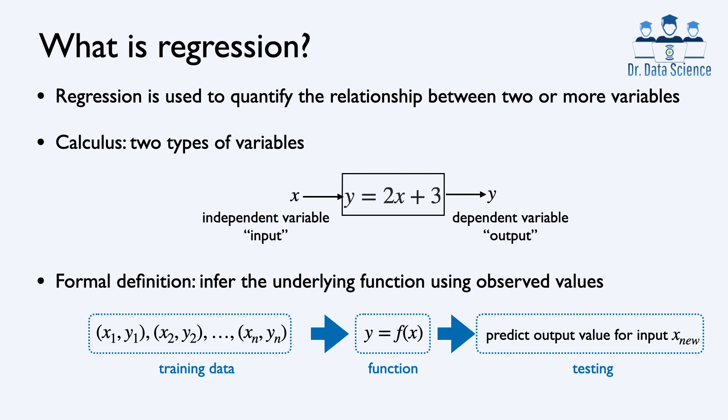In regression problems, we don't have access to this function, but instead we have access to observed values. So for n different values of x, we have access to the corresponding output values. This will constitute the training data set, meaning that we have these input-output pairs, which we show here by x1, y1, x2, y2, ..., xn, yn. The goal here is to infer the underlying function using these observations in the training data set.